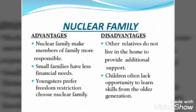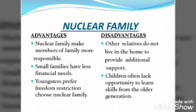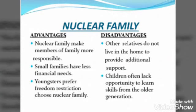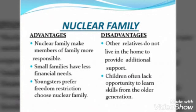The disadvantage of nuclear family: first, other relatives do not live in the home to provide additional support. Other relatives jaise cousins, uncles, aunts, guardians hote hain, woh hamare saath nahin rehte hain, isliye hume additional support nahin mil paata nuclear family mein. The second disadvantage is children often lack the opportunity to learn skills from the older generation. Older generation means jo hamare guardians hote hain, jo hume new skills sikhate hain, woh hum seekhne mein lack kar jaate hain.